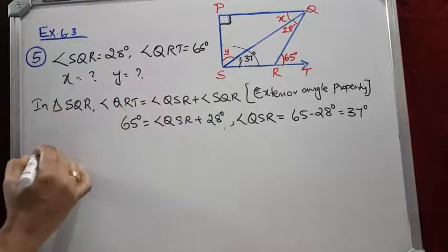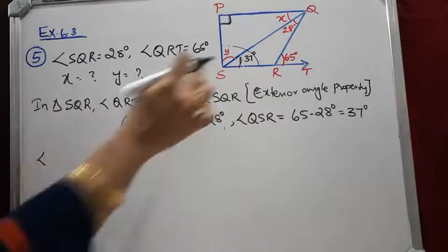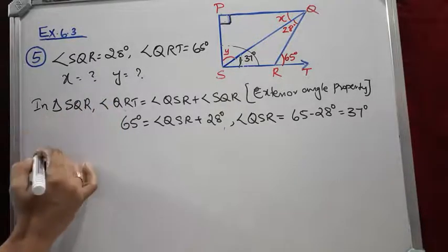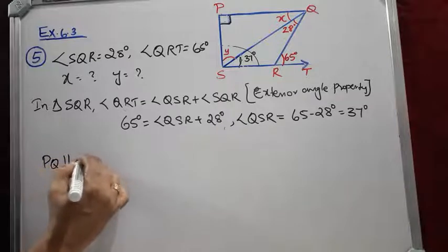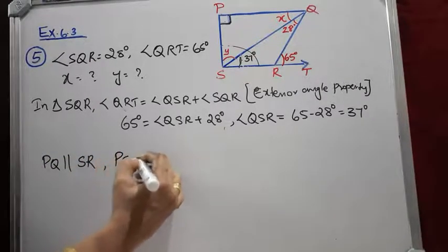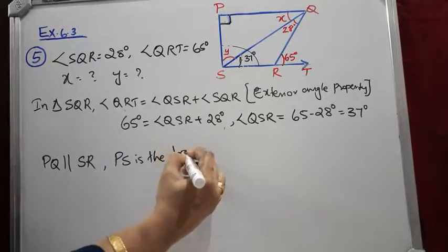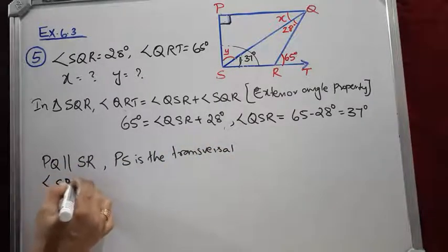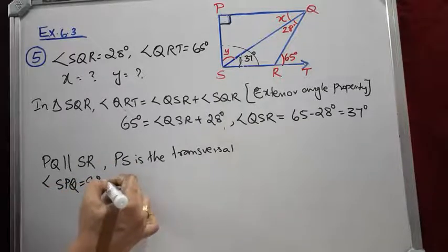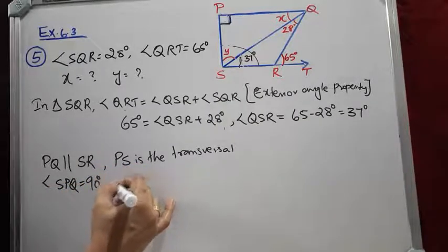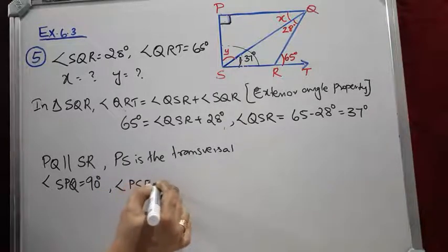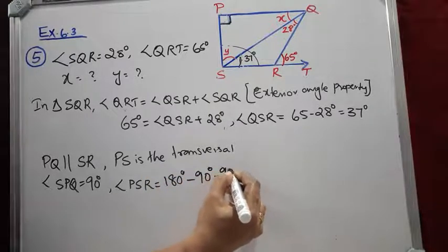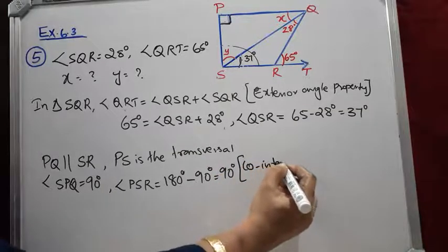Using the parallel condition — PQ is parallel to SR and PS is the transversal — angle SPQ equals 90 degrees. Therefore, angle PSR = 180 minus 90 degrees = 90 degrees. The reason is co-interior angles are supplementary.